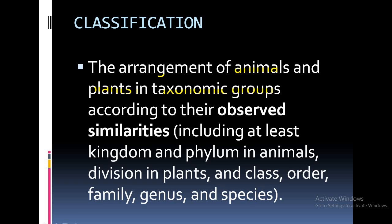So what is classification? Classification is the arrangement of animals and plants into taxonomic groups according to their observed similarities. For example, on your study table you do classification — in your school bag you keep all the books together and all the copies together, classifying printed and unprinted material. All stationary objects on your study table are also separated on the basis of their similarity.